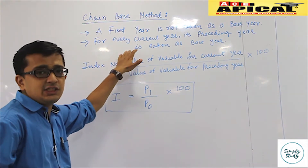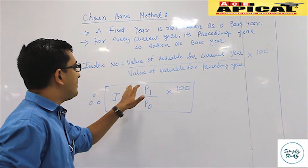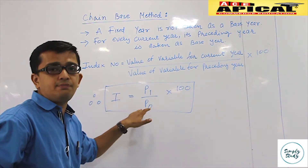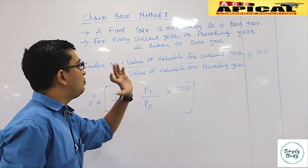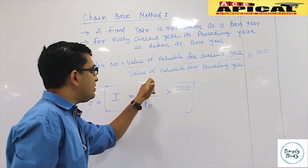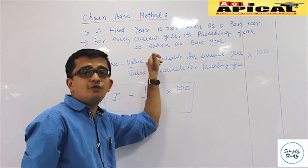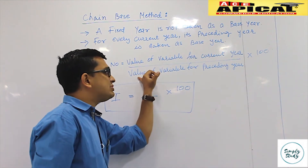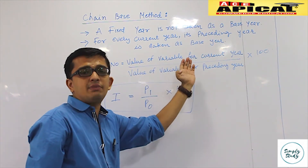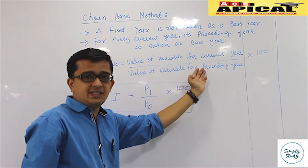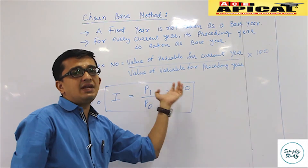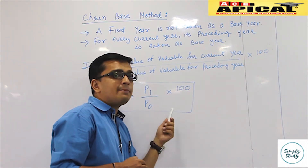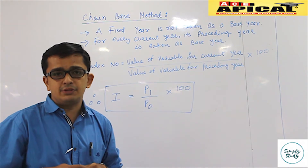Statistically, this formula can be written as: index number = (p1 / p0) × 100, where p1 stands for the value of the variable of the current year and p0 stands for the value of the variable of the preceding year. Now let's execute this formula by applying it to an example.